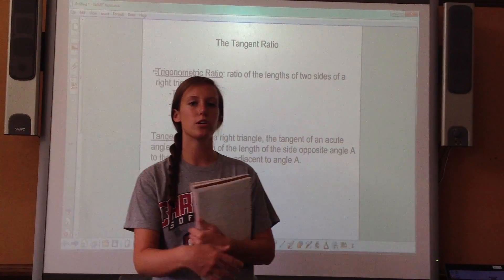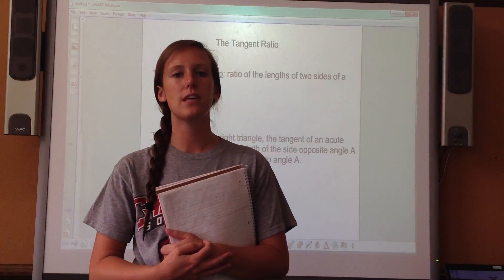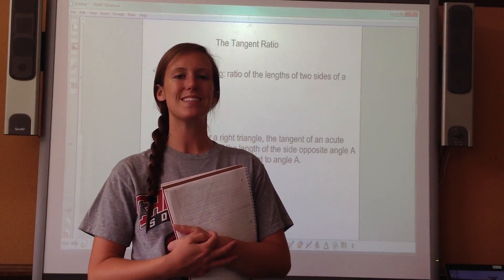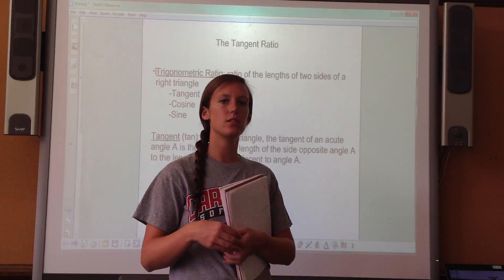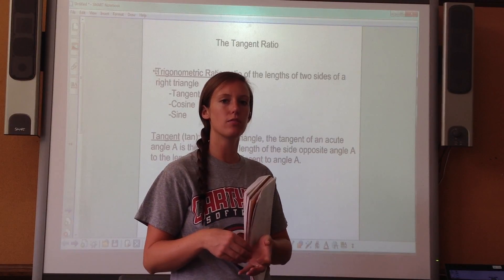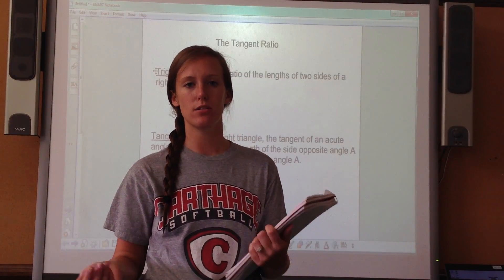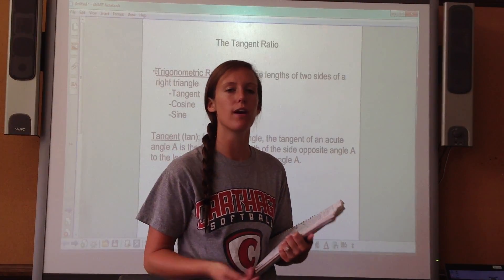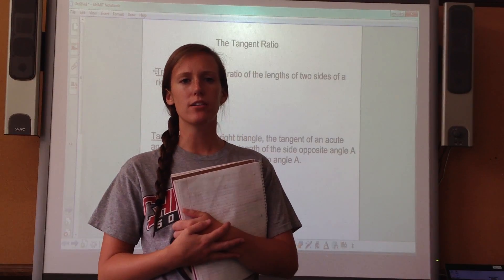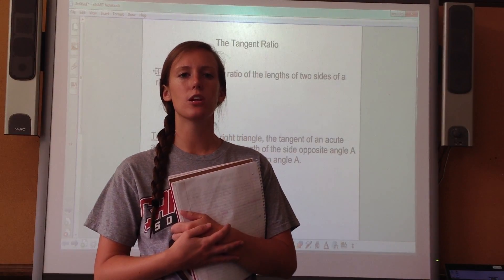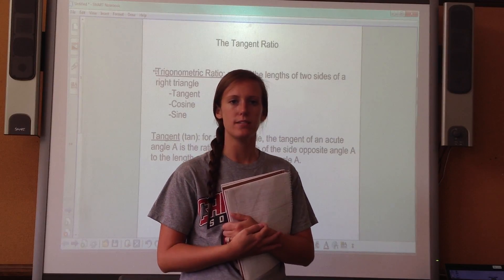In this chapter, you continue to learn more methods to find missing side lengths of triangles. In the last lesson, you learned how to find side lengths of special right triangles, like 45-45-90. You're not always going to have triangles like that, so you're going to be using methods you'll be learning in the next two lessons.